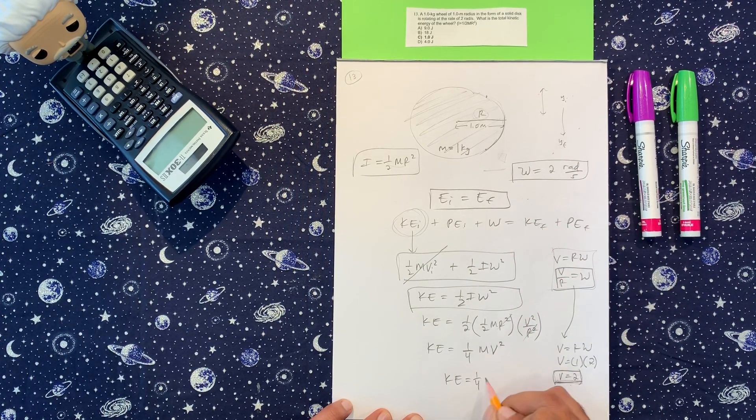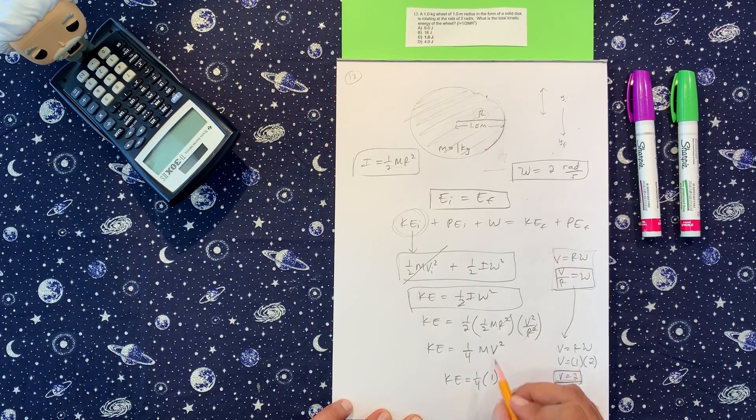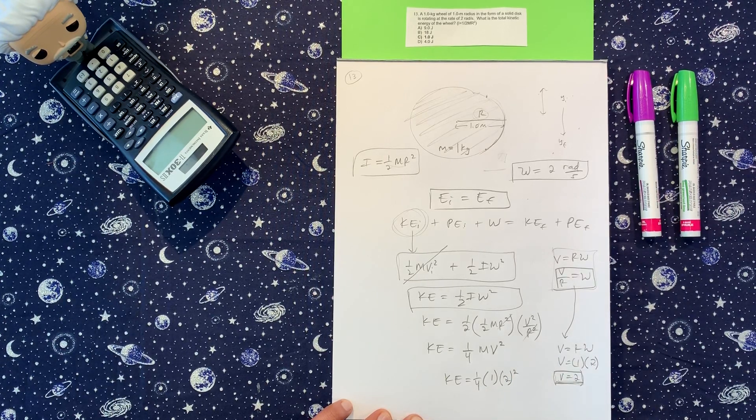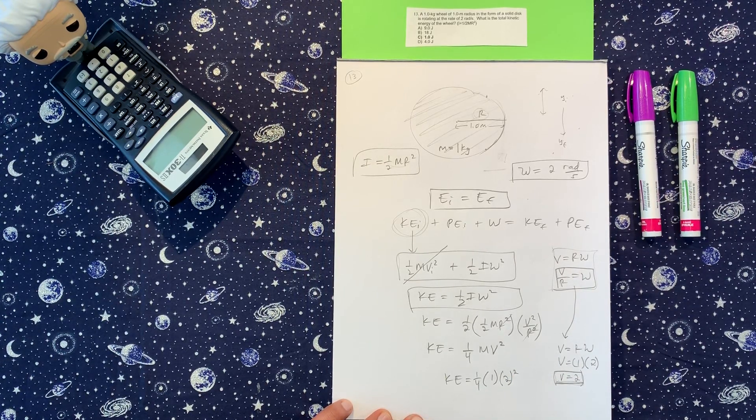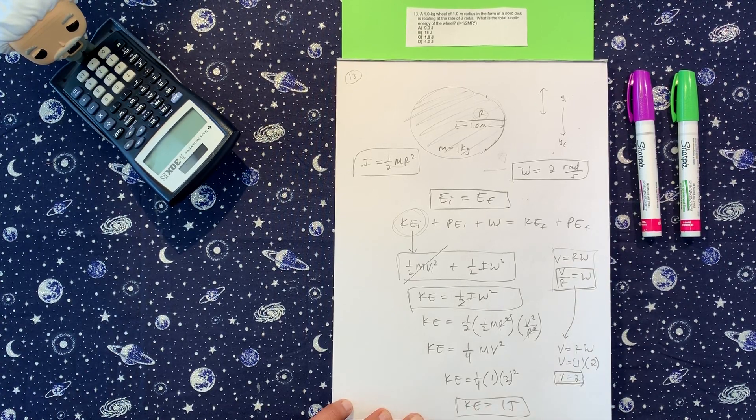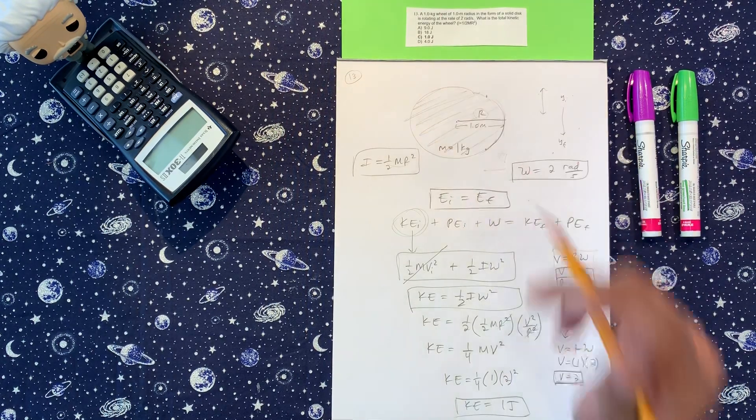But that being said, we got one fourth, the mass, one kilogram, and the velocity is two squared. So then we should get kinetic energy, one joule. Boring. But one joule, number C, so we're good to go.